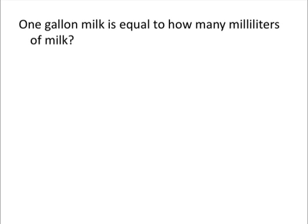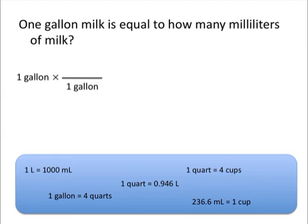Let's try another problem. 1 gallon of milk is equal to how many milliliters of milk? First we start by writing our given quantity, which is 1 gallon, and we note that the units we wish to obtain are milliliters. We know that we need to use a conversion factor that has units of gallons, and we want to put the units of gallons on the bottom so they cancel out. Looking at the conversion factors available, 1 gallon is equal to 4 quarts. Because we put gallons on the bottom, we know that 4 quarts goes on the top, allowing us to cancel out gallons. Because we haven't yet obtained units of milliliters, we need to keep going.